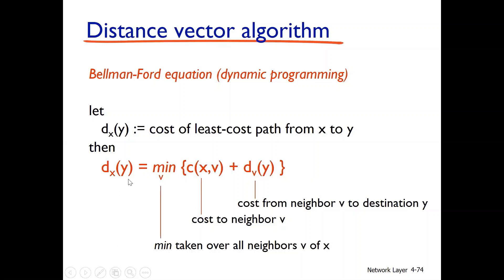Node x calculates the minimum cost. This means x considers all neighbor nodes v, taking the direct cost plus the path cost through each neighbor, and selects the minimum cost path.